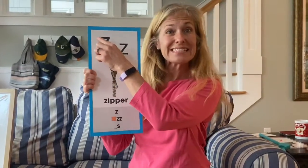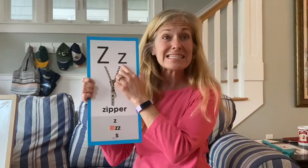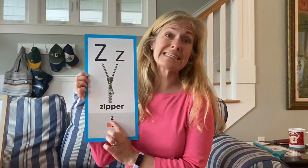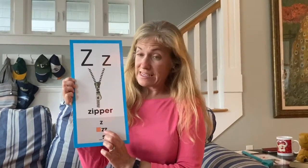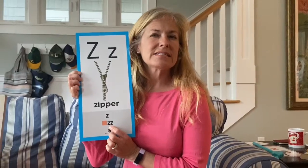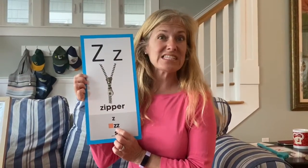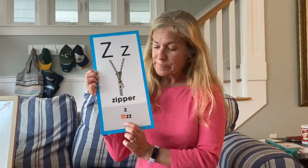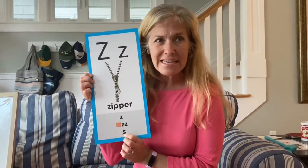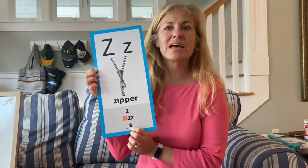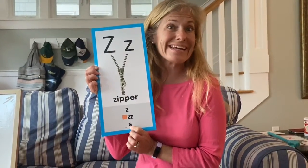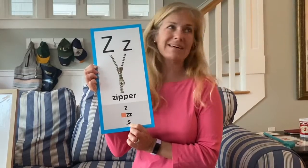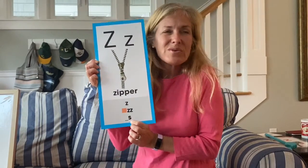Right here is capital Z and this is lowercase z. Now Z can say Z by itself. Z also says Z if it's at the end of a word and there are two Zs together, like the word buzz. And down here, S can actually make the Z sound too. We can hear it in our sight word 'is.' Do you hear that Z sound in there? But it's not a Z — it's an S, even though it sounds like a Z.